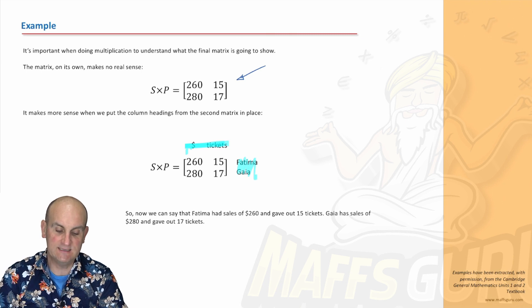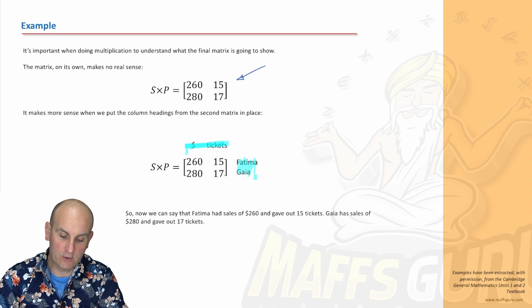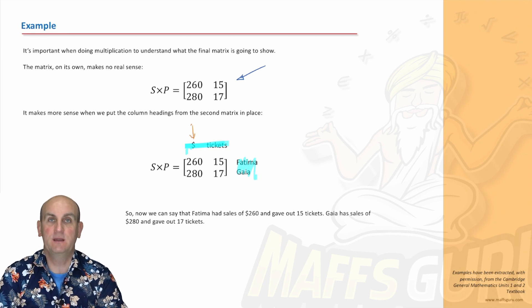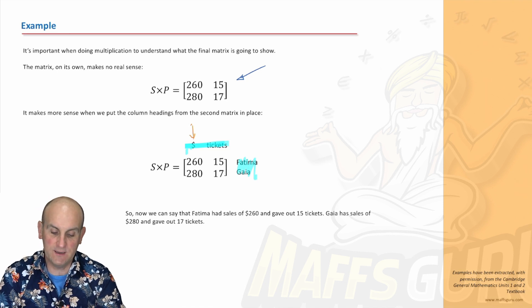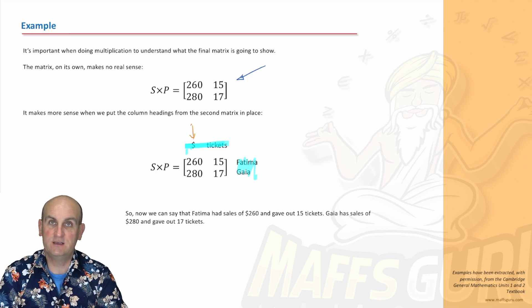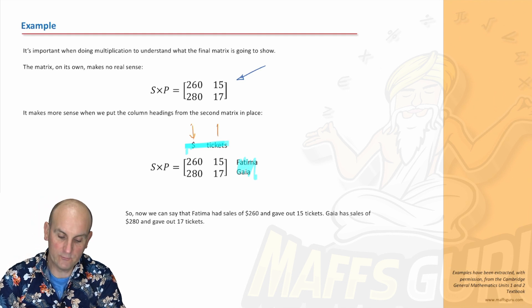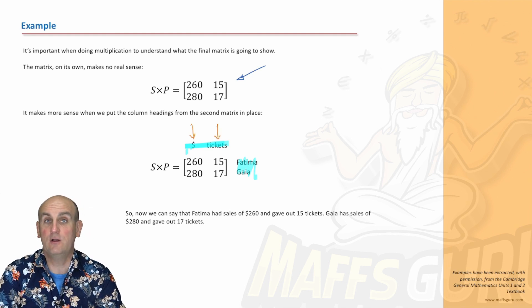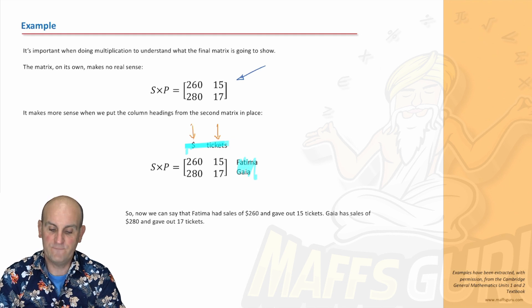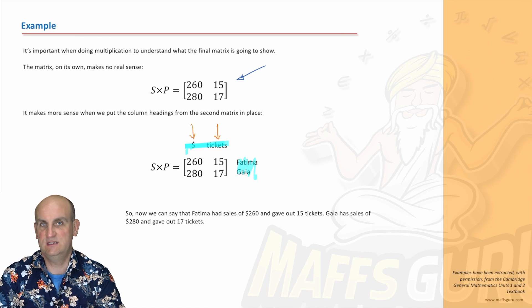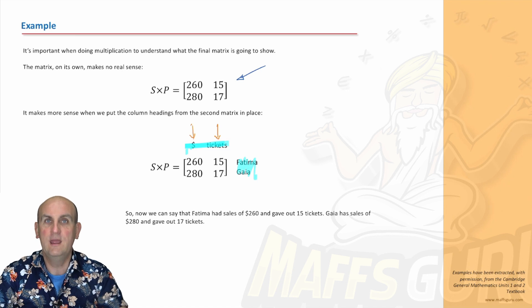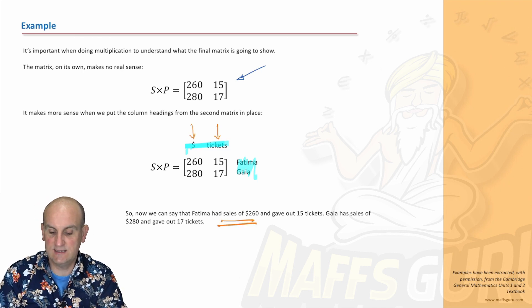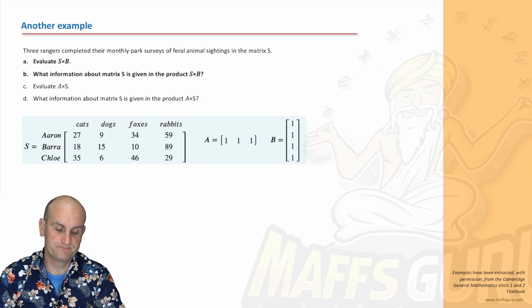That means I have my rows as Fatima and Gaia, and my columns are dollars and tickets. Getting those the right way around is really important to be able to show us what we're actually interpreting. The column here stands for how much money each of Fatima and Gaia actually earn in sales. Fatima earned $260 in sales, and Gaia $280 in sales. The second column is the number of tickets that were given away. Fatima would have had 15 tickets, and Gaia would have had 17 tickets.